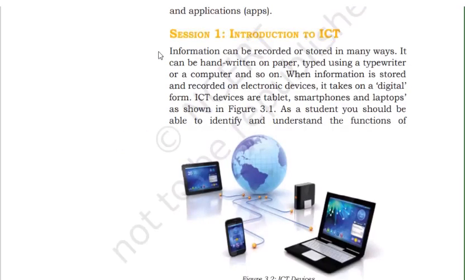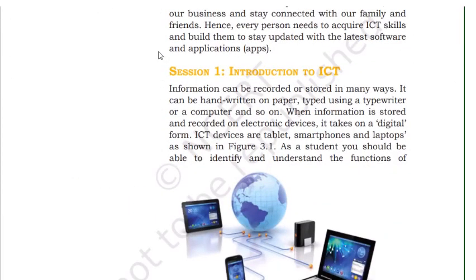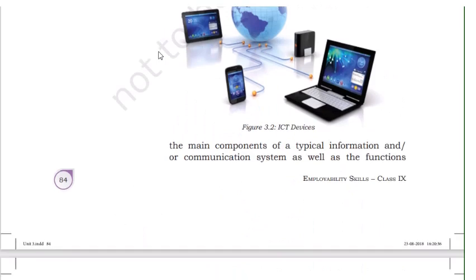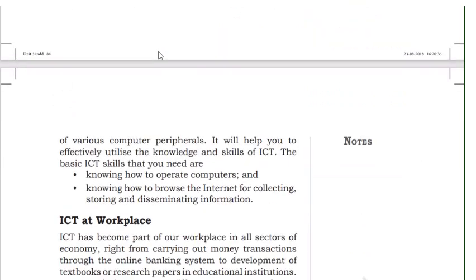Let's see the first session: Introduction to ICT. Information can be recorded or stored in many ways — it can be handwritten on paper, typed using a typewriter or computer, and so on. When information is stored and recorded on an electronic device, it takes on a digital form. ICT devices include tablets, smartphones, and laptops. As a student, you should be able to identify and understand the functions of the main components of a typical information and communication system, including the variety of computer peripherals.